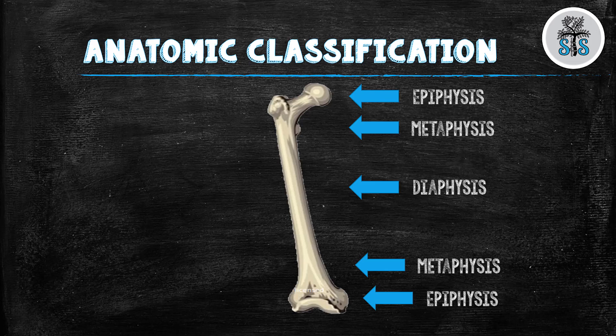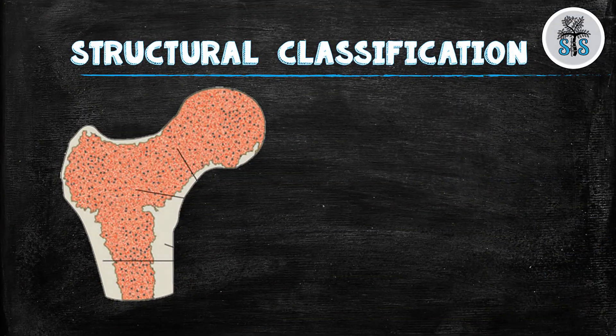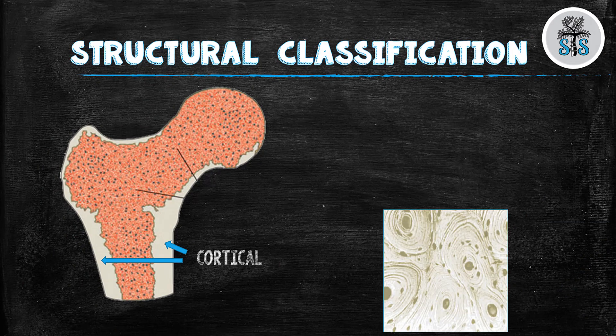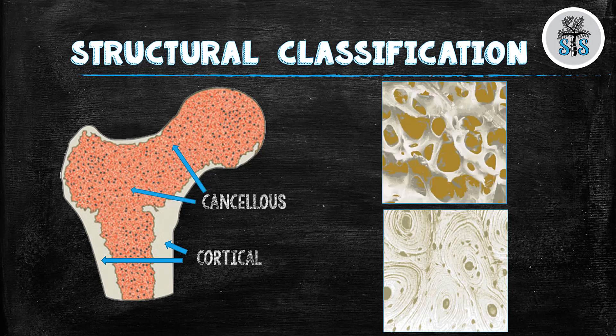Speaking of cortical and cancellous bone, that's a nice transition into the structural classification system. Looking at the macroscopic level of bone, there are two main components: cortical or compact bone, and cancellous or spongy or trabecular bone. Cortical bone makes up 80% of your skeleton. It's on the outside and has a high Young's modulus — a measure of stiffness — so cortical bone is much stiffer than cancellous bone. It also has a slower turnover rate, so there is lesser modeling potential. At the microscopic level, cortical bone is made of packed osteons and Haversian systems.